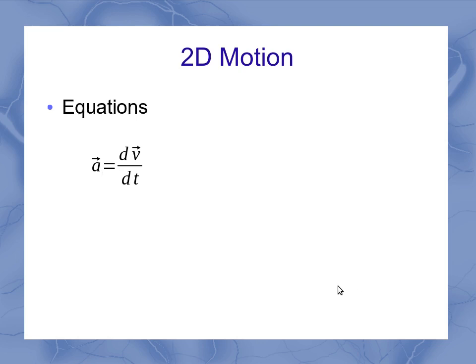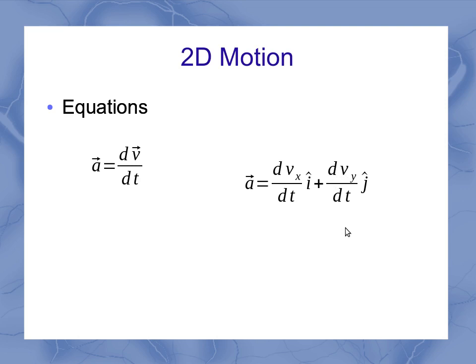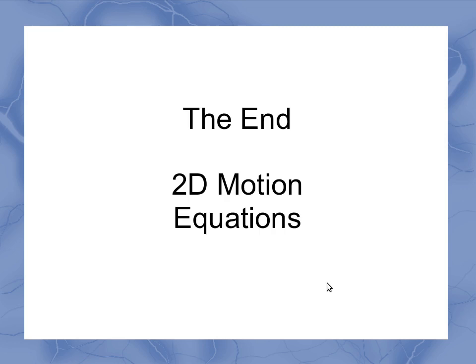It's a little bit neater when I move to the derivative version. It's the derivative of the vx component and the derivative of the vy component, and that gives me my ax and my ay. And that's my two-dimensional motion equations.